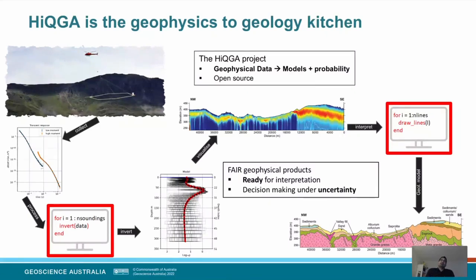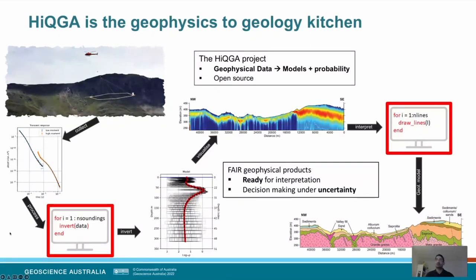After you do the interpretation of the section — where the reds represent very conducting features like clay or a saline aquifer, and the blues are very resistive features like crystalline basement — you want to get from the raw data to the geology. I like to think of this as a kitchen: the geology is the food that we want to eat, and thinking of our project as a MasterChef kind of enterprise, we really need good tools to make the geology ingestible, because we have to go from volts to geology.